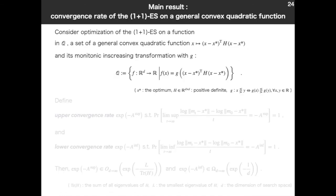Ok, finally, I present our main result, convergence rate of the (1+1)-ES on a general convex quadratic function. Let's consider optimization of the (1+1)-ES on a function in Q. Q is a set of functions. First, we consider a general convex quadratic function of this form. x* is the optimum and H is a positive definite matrix, so this is a general form of convex quadratic function. And we also consider its monotonic increasing transformation with z. z is a transformation of a scalar, which does not change the magnitude correlation as formalized here.